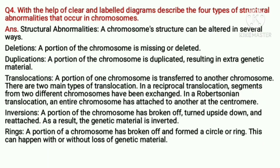Question number four: with the help of clear and labelled diagrams, describe the four types of structural abnormalities that occur in chromosomes.